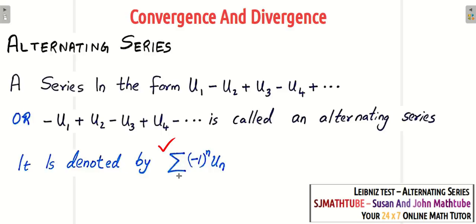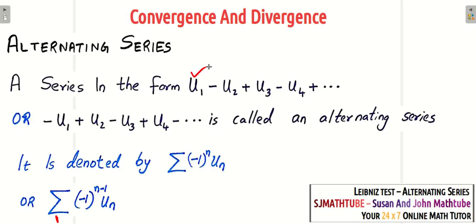Remember we always start from 1. When you put n=1 it gives minus u1, when you put n=2 it gives plus u2, when you put n=3 it gives minus u3, and so on. Alternatively, using (-1)^(n+1): when n=1 you get (-1)^0 = 1, giving u1; when n=2 it becomes negative; when n=3 it becomes positive. Both formulations carry the same logic.